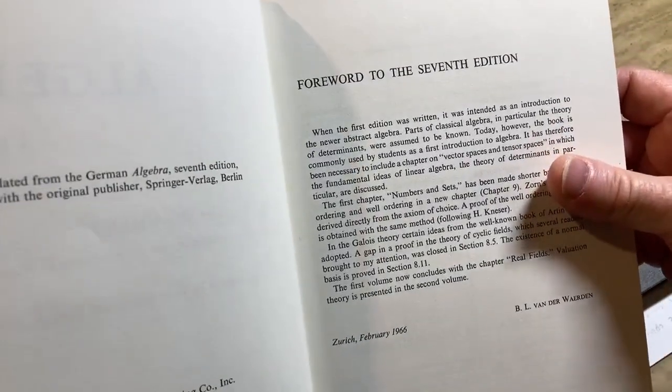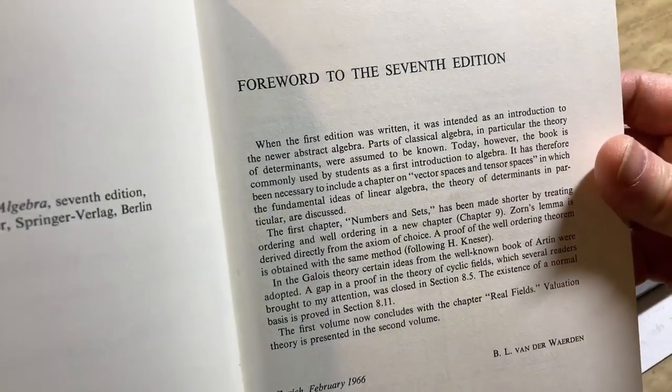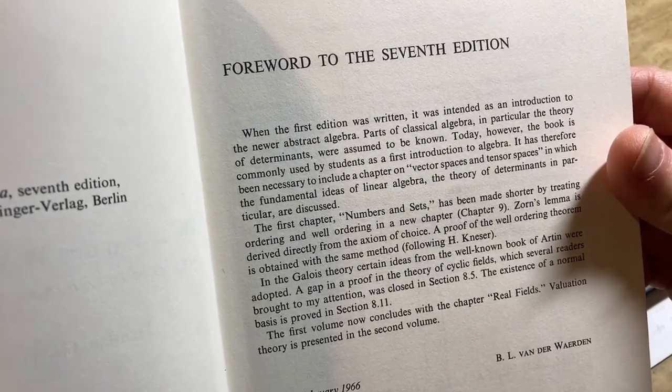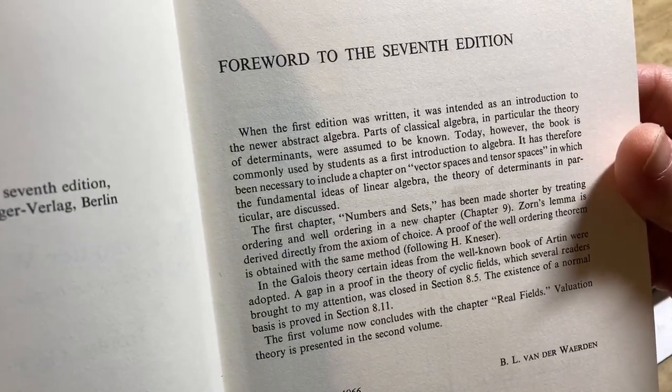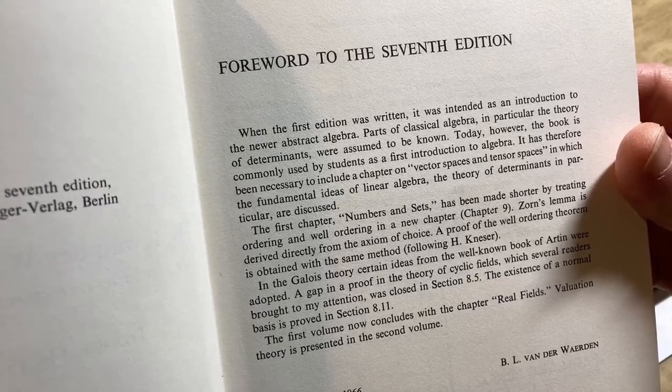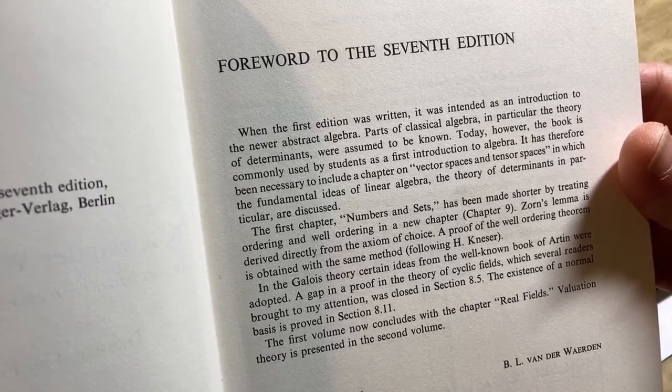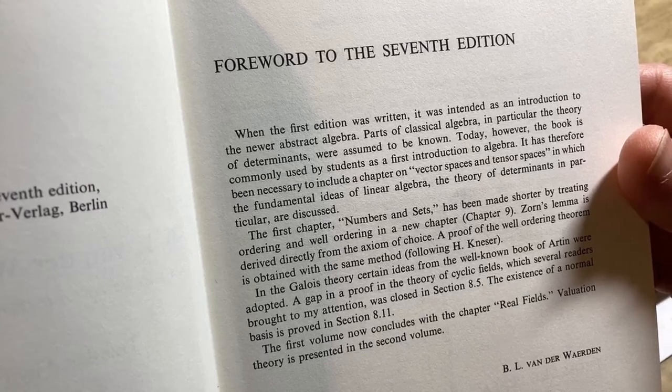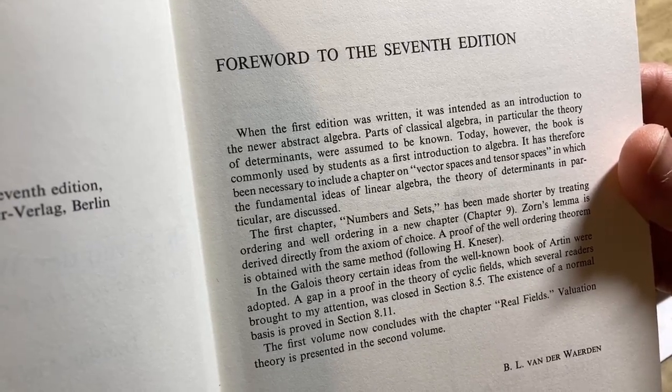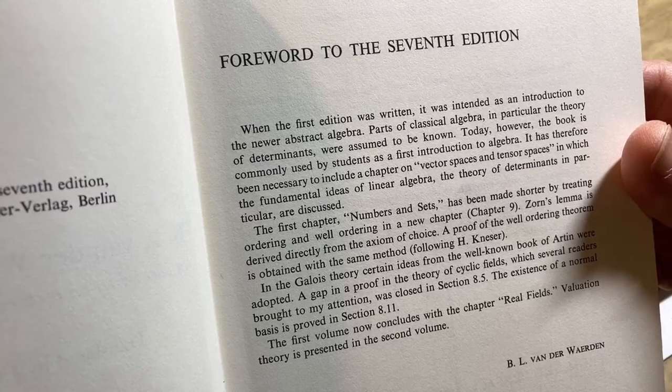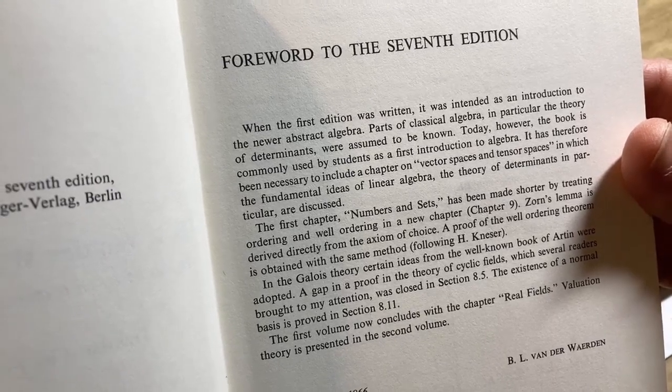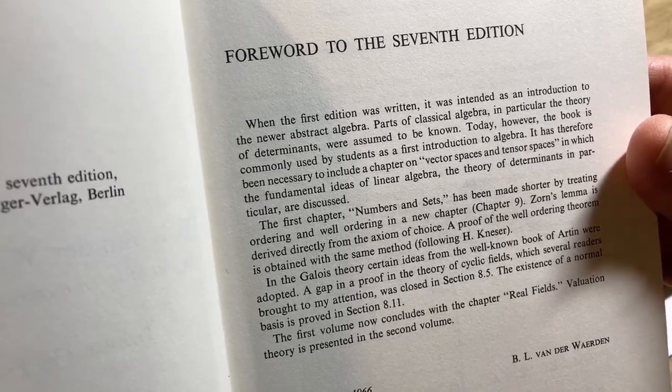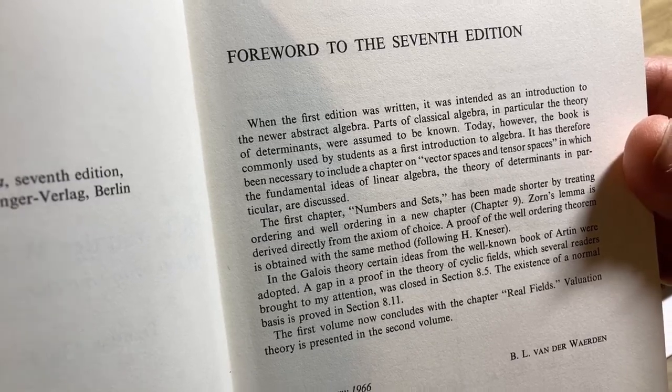Here's the forward to the seventh edition. It says when the first edition was written, it was intended as an introduction to the newer abstract algebra. Parts of classical algebra, in particular the theory of determinants, were assumed to be known. Today, however, the book is commonly used by students as a first introduction to algebra. So that really contradicts everything I just said. This was used as a beginner book, but I still think that my choice is easier.